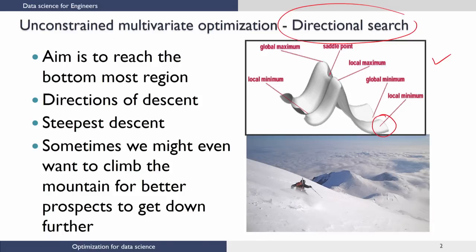This is a point which is at the bottom of the hill — we call this a minimum point. However, this is a local minimum because right next to it there is another point which is even lower, which we call the global minimum. We also see that there is a local maximum and a global maximum here. And there are also points which are called saddle points.